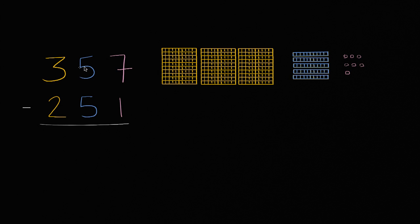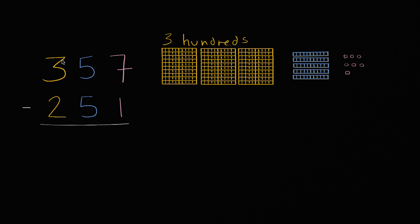We have the number 357. The three is in the hundreds place, so that represents three hundreds — one hundred, two hundred, three hundreds. Three hundreds right over here. That's what this three represents because it's in the hundreds place. This is the hundreds place.